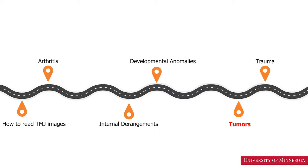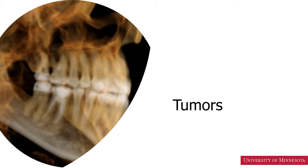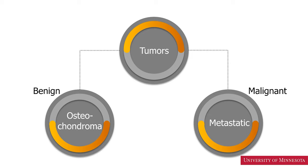We have crossed another landmark. Now we'll learn about the tumors of the temporomandibular joints. Tumors can be divided into benign and malignant. Benign tumors are the most common. Malignant tumors are rare, and when we have malignant tumors, most are metastatic — we are not going to talk about malignancy. For benign tumors, the most common is osteochondroma. We also have osteoma. There can be other types of benign tumors as well. Let's start with osteochondroma and try to differentiate it from osteoma and also compare with hyperplasia of the condylar head.